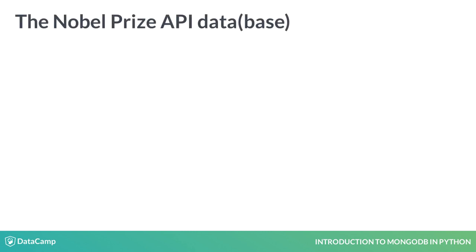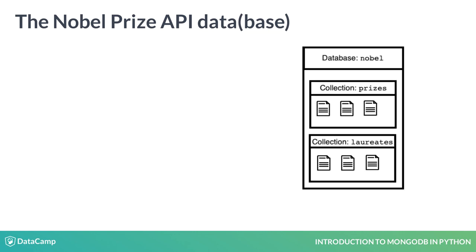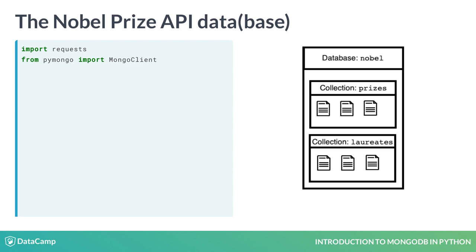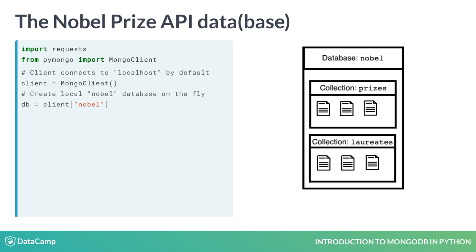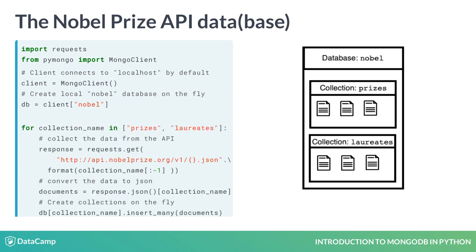Let's make concrete how JSON maps to Python and, in turn, to MongoDB. Here is how I accessed the Nobel Prize API and collected its data into a Mongo database for you. First, I import the requests library, which will get the data from the API. I also import the MongoClient class from PyMongo. PyMongo is the official Python driver for MongoDB. Then, I connect to my local database server. I say that I want a database with the name Nobel, and MongoDB creates it. Finally, I gather JSON responses for the prize and laureate endpoints. I insert them into the prizes and laureates collections, which MongoDB also creates for me.